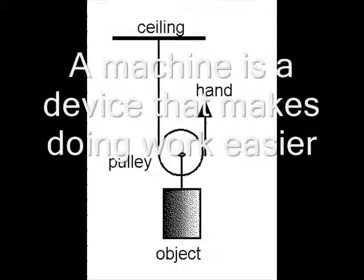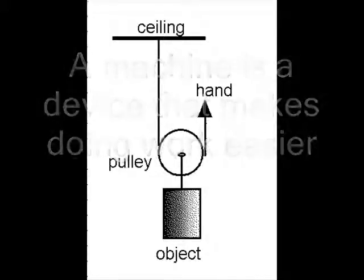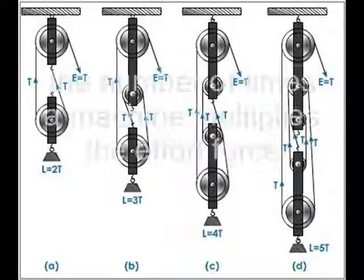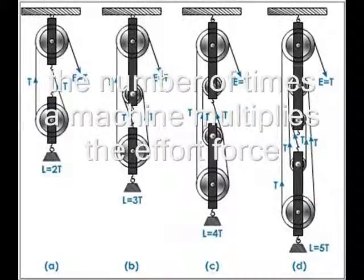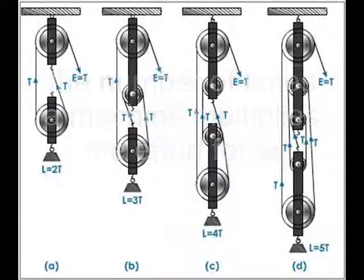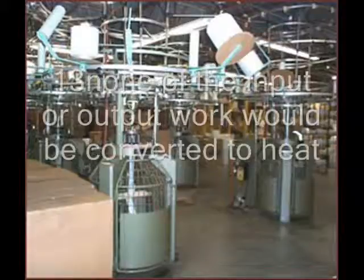A machine is a device that makes doing work easier. The mechanical advantage is the number of times a machine multiplies the force of effort.